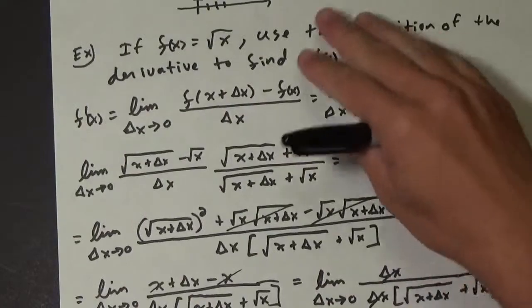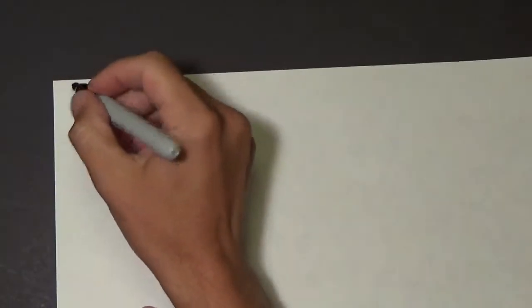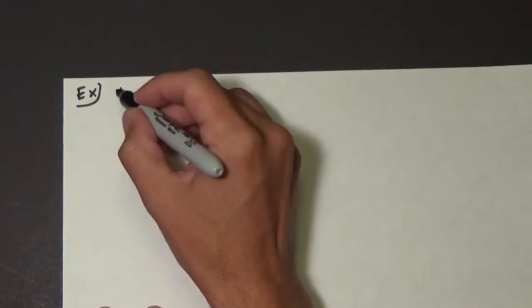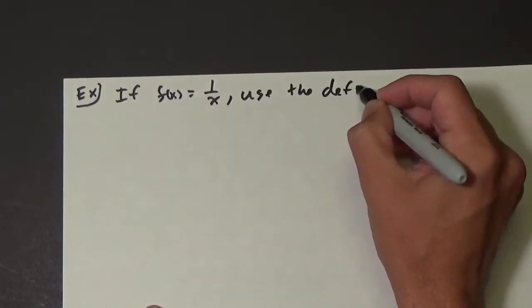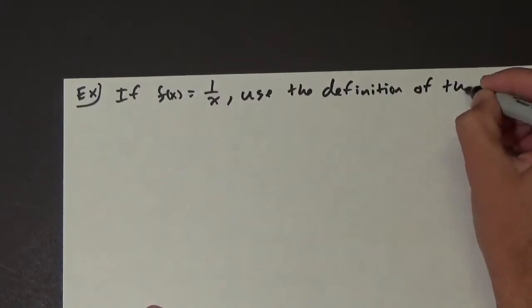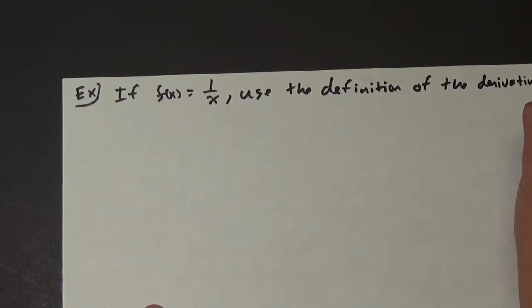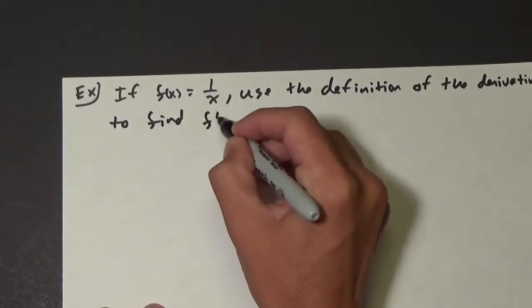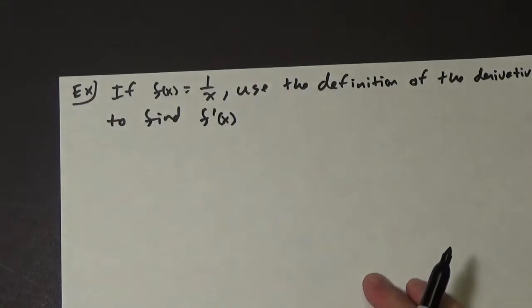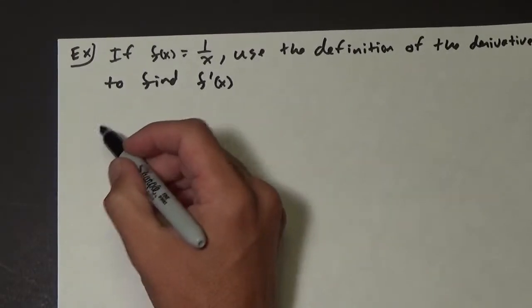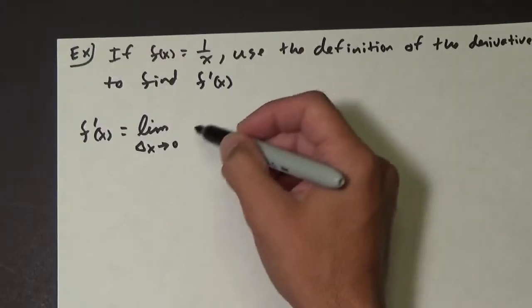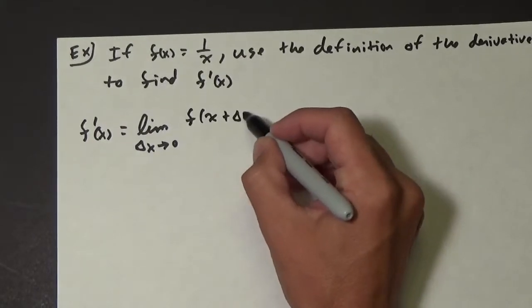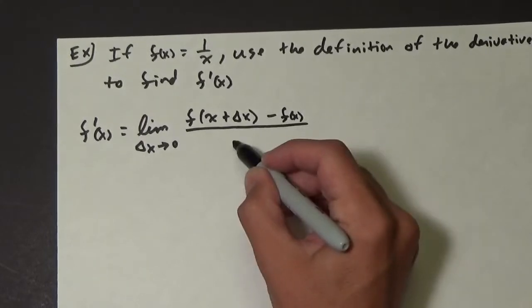Okay, so there is another good example. Let's do one more. If f of x equals 1 over x, use the definition of the derivative to find f prime of x. So f prime of x — hopefully you're starting to memorize this — is the limit as delta x approaches zero of f of x plus delta x minus f of x, all over delta x.